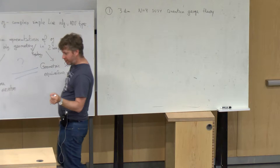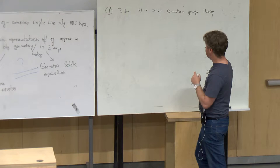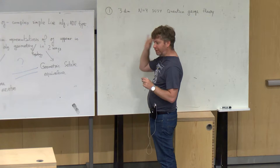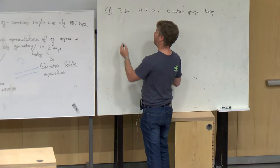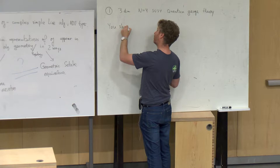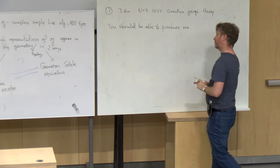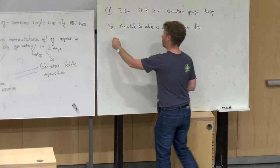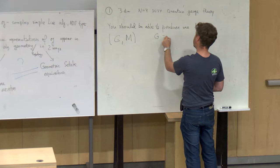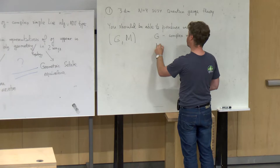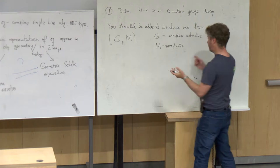One thing physicists tell you is that it's generally difficult to classify those theories, but there is some mathematical data from which you're supposed to be able to produce such a theory. At least you should be able to produce one from the following very simple mathematical data: from a pair G, M, where G is a complex reductive group — it can be a torus, for example — and M is a symplectic representation of G, meaning a linear representation which has a symplectic form.